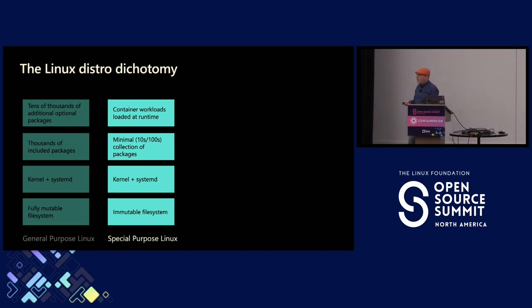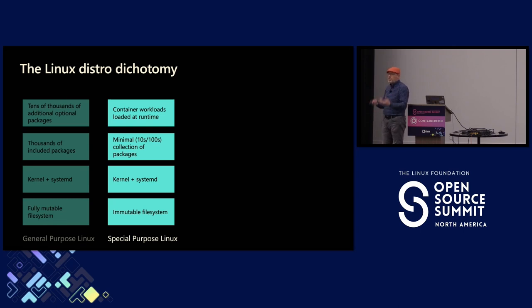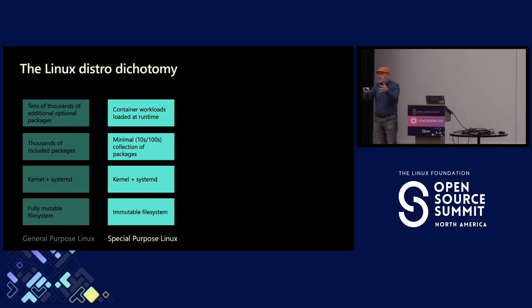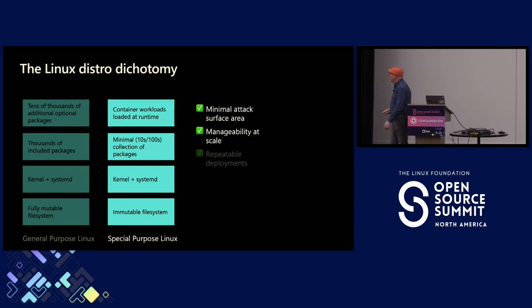There are tools for addressing some of these things, but fundamentally they're all remediating something which is a characteristic of the operating system. So how do we think about a special purpose operating system? CoreOS was probably the original and still maybe the best known, but there are a bunch of these out there now. They typically work on the concept of there being an immutable file system — the operating system files deployed on that machine are never going to change. You've got a pretty small collection of packages, maybe tens or low hundreds of packages deployed into the machine.